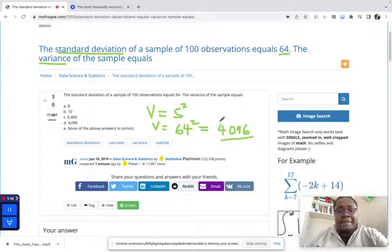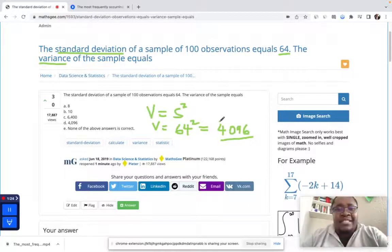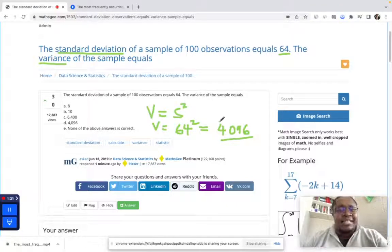Vice versa, if you're given the variance, just find the square root of the variance to get the standard deviation. If you have any other statistics questions,